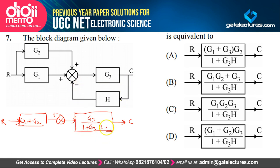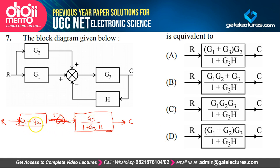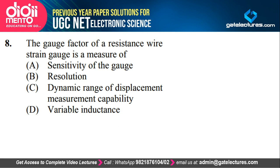After simplification we no longer need the adder. The two remaining blocks — (G1 + G2) and G3/(1 + G3·H) — are cascaded, so they are multiplied together. The equivalent transfer function is (G1 + G2) × G3 / (1 + G3·H), which is option B. The correct answer is option B.